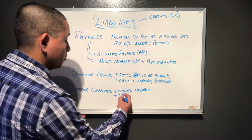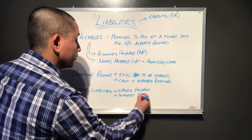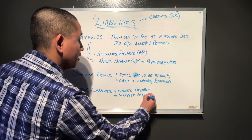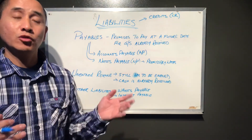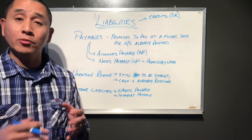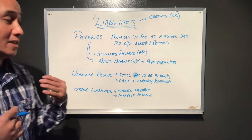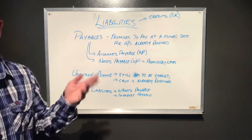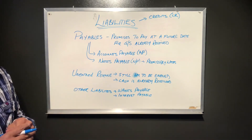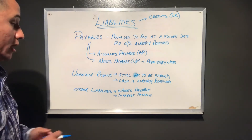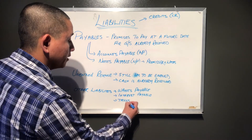Another example of other liabilities would be interest payable. For example, if you have a loan that is outstanding, the interest being charged on that loan that you have not yet paid would be a payable — you're stating to the organization or financial institution that you recognize this and will be paying them at some point in the future.